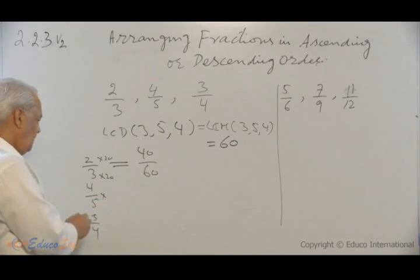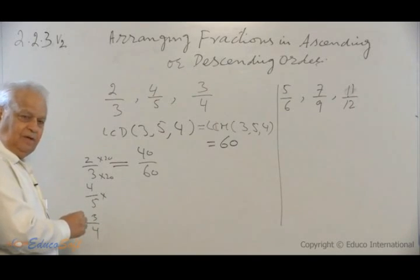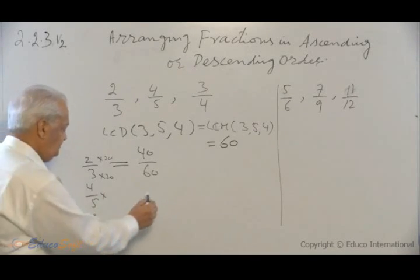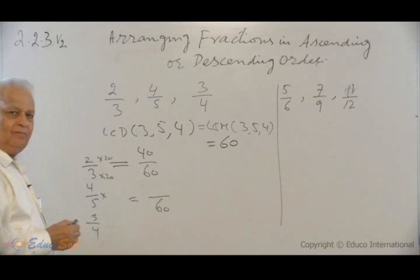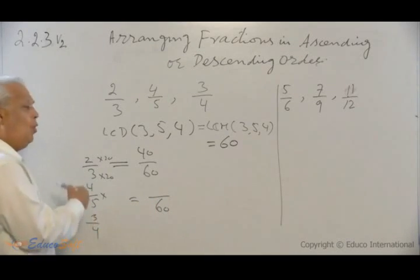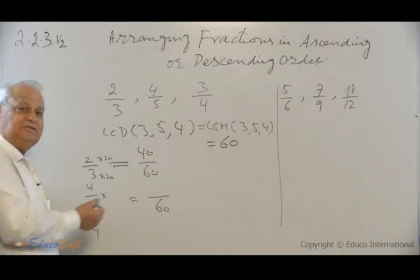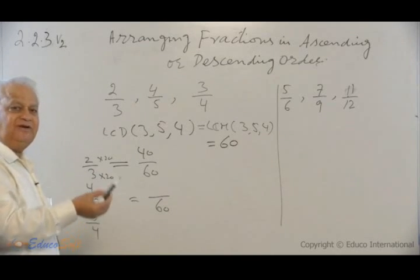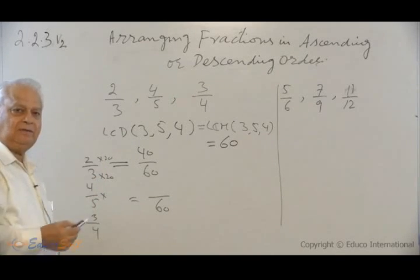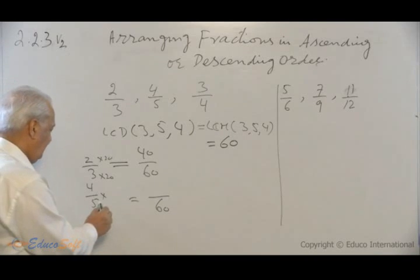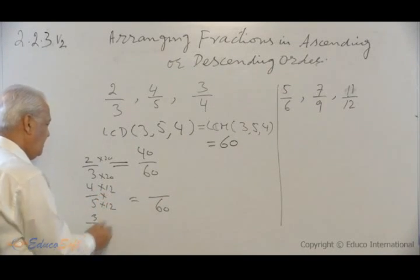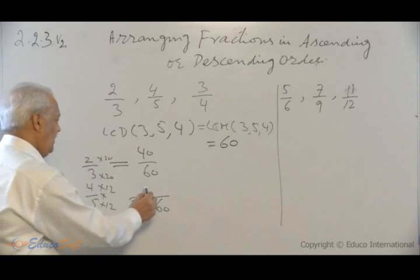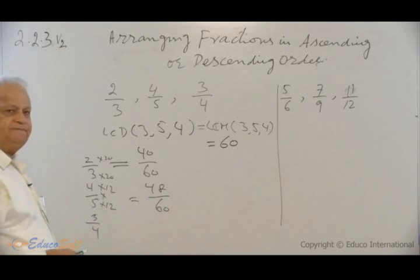Similarly, 4 over 5. You want the denominator to be 60. So 5 times what will make it 60? 60 divided by 5 equal to 12. So 5 times 12 in the numerator, multiply and divide. So you will have 48 divided by 60.